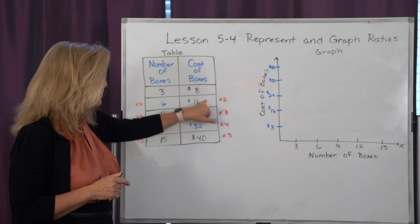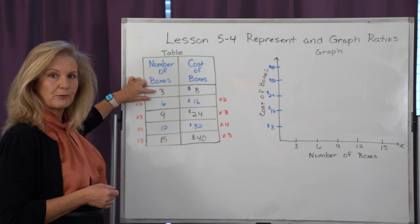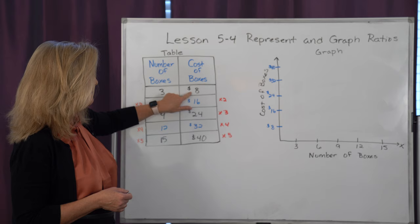And I can continue to do that, creating more examples of equivalent ratios. I always go back to my original ratio. So I could do 3 times 3, which is 9 boxes. Therefore, I'd have to do 8 times 3, which is $24.